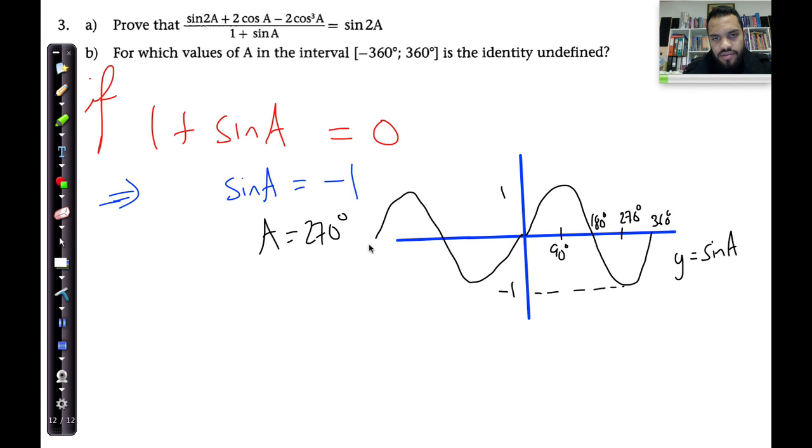Where that is minus 360. That over there is going to be negative 270, this is going to be negative 180, and then I also have minus 90 over here. Now you can see that theta will be equal, or A in this case, will be equal to 270 degrees or minus 90 degrees.